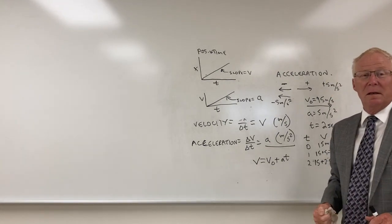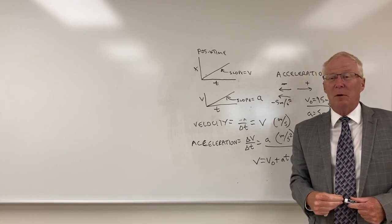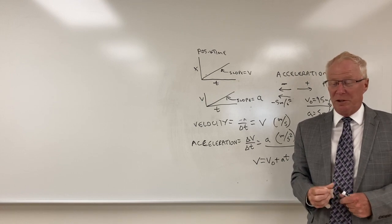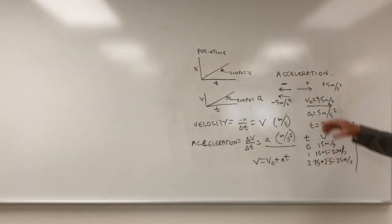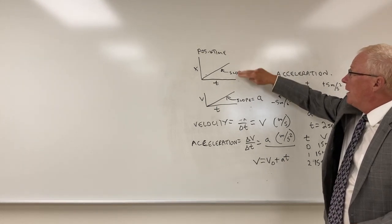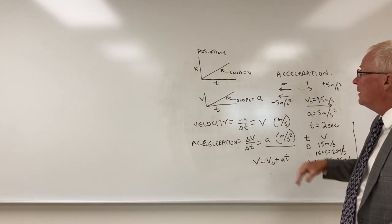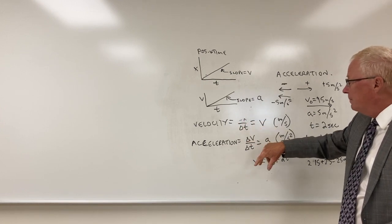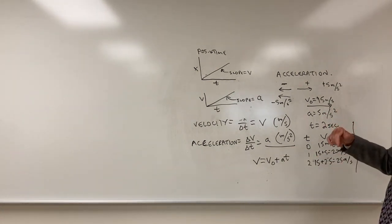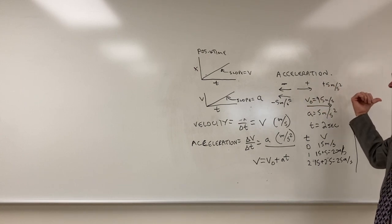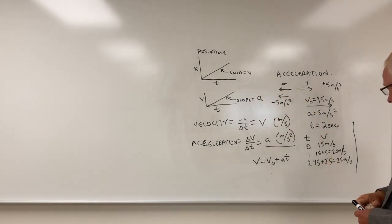Good morning. This is chapter 2, lecture 2b on velocity, motion, and acceleration in one direction, whether it's horizontally or vertically. That's what we picked up and did last time. For a position versus time graph, the slope is velocity. For a velocity versus time graph, the slope is the acceleration. We define velocity as a change of distance over change of time. Acceleration is a change of velocity over change of time. We define acceleration as positive if it's going to the right and negative if acceleration is to the left. That does not mean it's slowing down if the acceleration is negative.